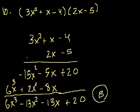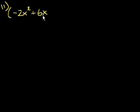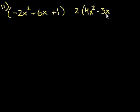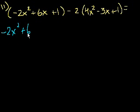Problem 11. This is problem 11, just so you know what we're doing. Minus 2x squared plus 6x plus 1 minus 2 times 4x squared minus 3x plus 1 is equal to. Well, now we just have to simplify this.